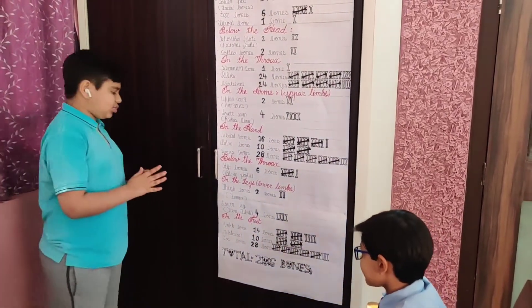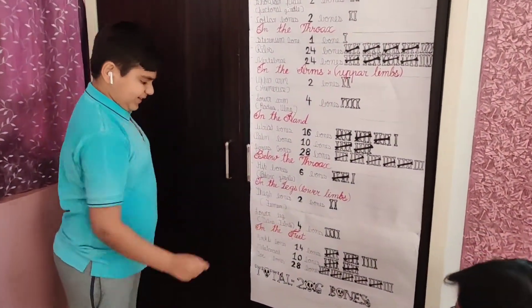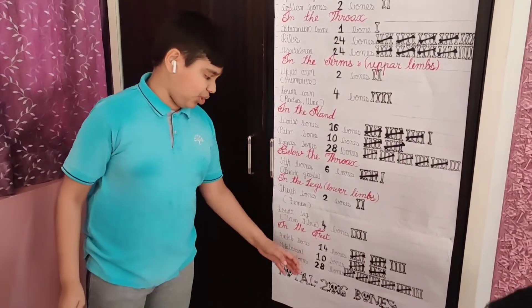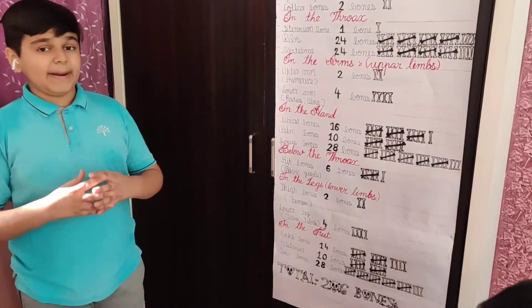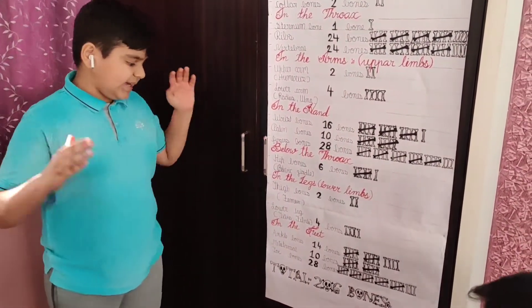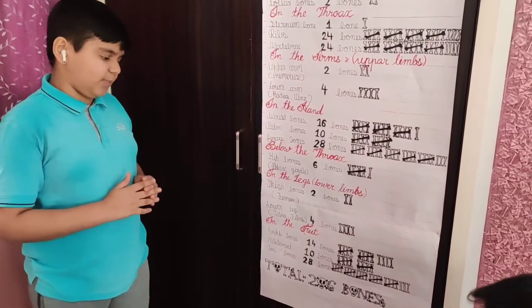The lower leg has 4 bones, also known as the tibia and fibula. Now bones in the feet: ankles have 14 bones, the metatarsal has 10 bones, and the toes have 28 bones.